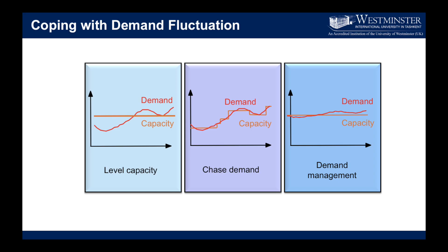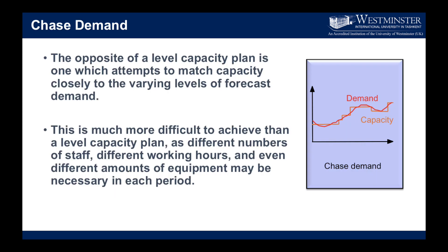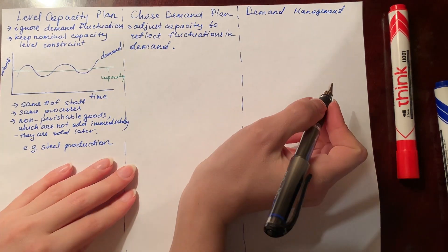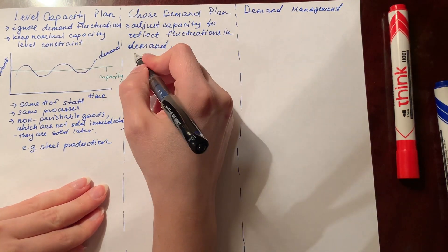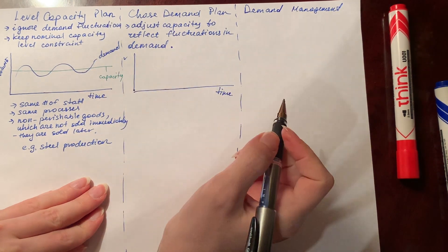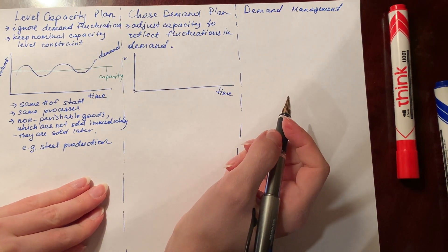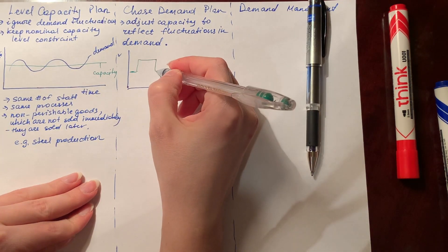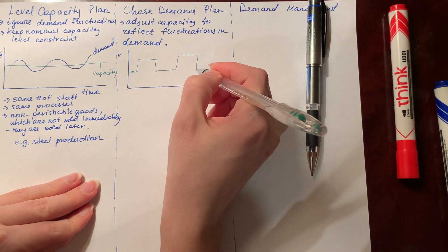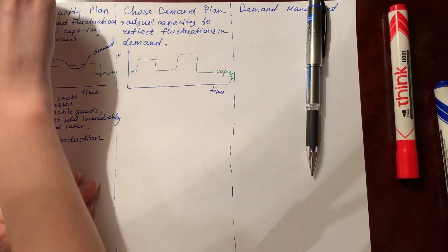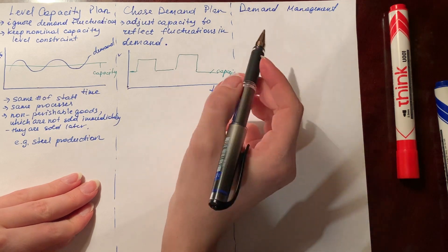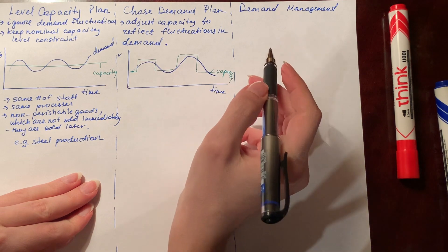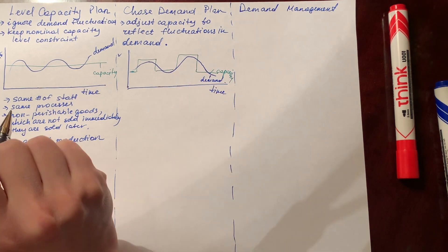The second approach or strategy is chase demand, which tells us to adjust your company's capacity to reflect fluctuations in demand. In the graph, demand is shown in blue and fluctuates throughout the year, and the company adjusts its capacity — the green line — to meet demand fluctuations. Usually your capacity will be adjusted to match demand fluctuations.